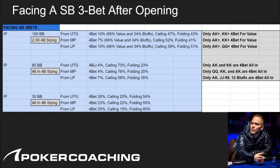At 60 big blinds facing a small blind three-bet, we four-bet much less and play many hands as traps. At this stack depth aces is played as a pure call. Why? It helps our overall calling range — when we just call with aces, kings, queens, jacks, ace-king, ace-queen, ace-jack, king-queen suited, the small blind can't barrel off as aggressively as they could if our range were capped. The solver says the best strategy is to leave a lot of strength in the calling range, so four-bets are very infrequent.